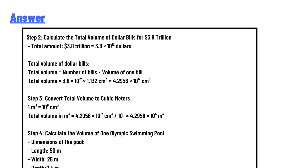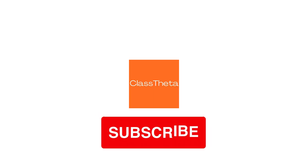Step 5: Calculate the number of Olympic swimming pools filled. Number of pools equals total volume of dollar bills divided by volume of one pool. Number of pools equals 4.2956 times 10 to the power divided by 1875, which equals approximately 2287. Conclusion: the volume of dollars spent by the U.S. federal government would fill approximately 2287 Olympic swimming pools.